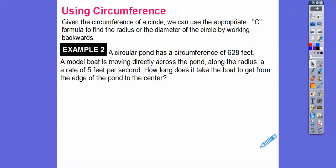So a circular pond has a circumference of 628 feet. So imagine we got this circle all the way around. And so our circumference formula is 2 pi r or pi times diameter. It depends on if they're talking about the radius or the diameter. So here they're talking about the radius. So I'm going to use 2 pi r. So the circumference is 628. That's going to equal 2 times pi times the radius. And so this model boat is moving directly across the pond along the radius at a rate of 5 feet per second. How long does it take the boat to get from the edge of the pond to the center? So we have to figure out the radius first, you guys, to figure out. And then we'll use this speed right here and do a little division right there.